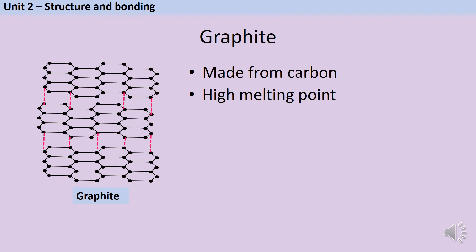Whereas in diamond each carbon atom makes four strong covalent bonds, in graphite each atom only makes three covalent bonds and that means that there's one electron left spare.